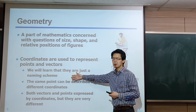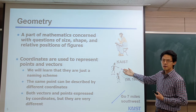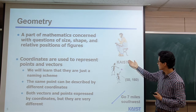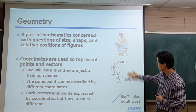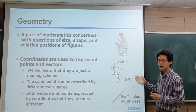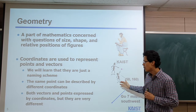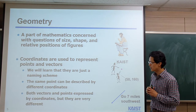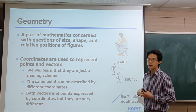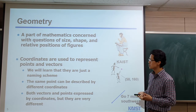In a way, coordinates are just a naming scheme — it means that we can change the name. For example, given a point on a map, some people say it has one coordinate, and some people can say that this point actually has a different coordinate. Different people can use different coordinate systems, and these are just kinds of names. Points and vectors are actually expressed by coordinates, but we know that they are very different, even though they can be represented in the same coordinate system. We will talk about those issues to answer that question.